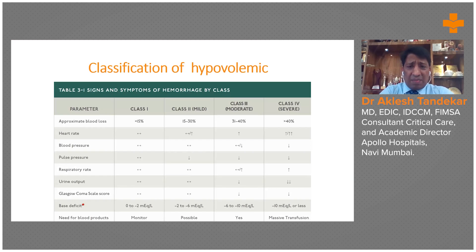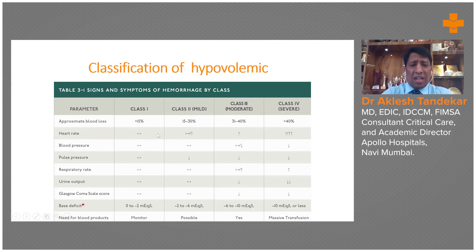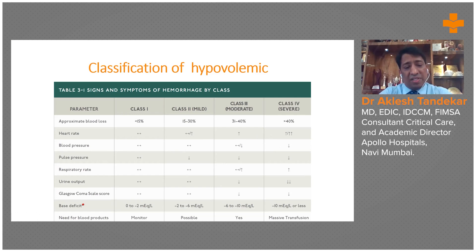Hypovolemic shock is classified into four classes. Class one involves blood loss of up to 15%, class two 15 to 30%, class three 30 to 40%, and class four more than 40%. Heart rate and blood pressure may be near normal in class one and two, but there will be tachycardia and hypotension in class three and four. Low pulse pressure, the difference between systolic and diastolic blood pressure, is generally seen in class three and four shock.